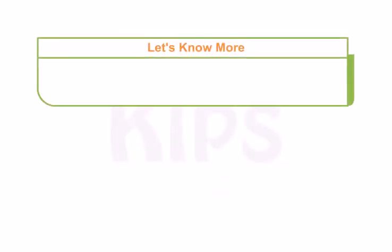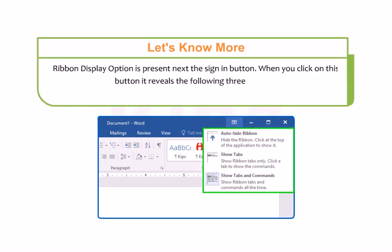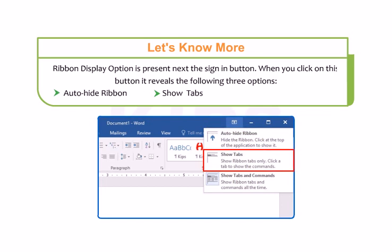A feature to display or hide ribbons called Ribbon Display Options is present next to the Sign In button. When you click on this button, it reveals three options: Auto Hide Ribbon, Show Tabs, and Show Tabs and Commands.